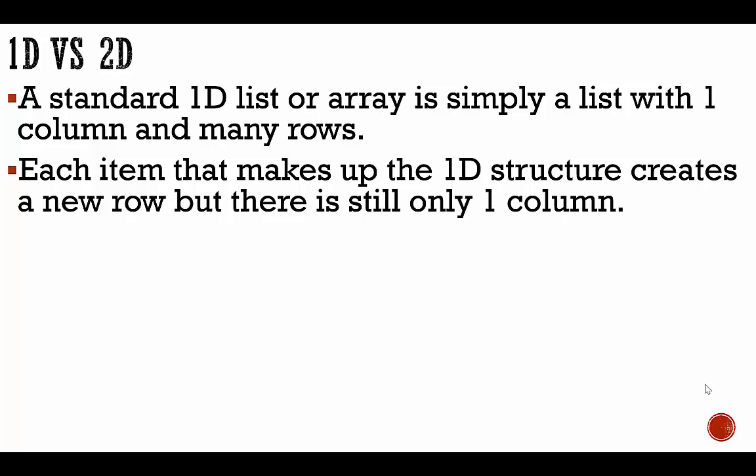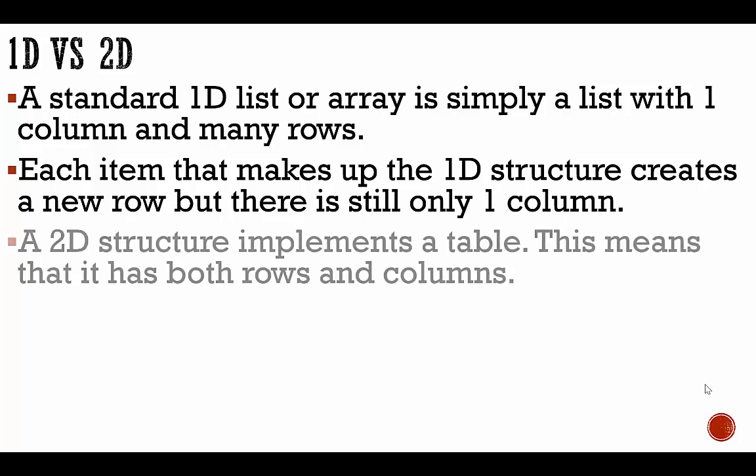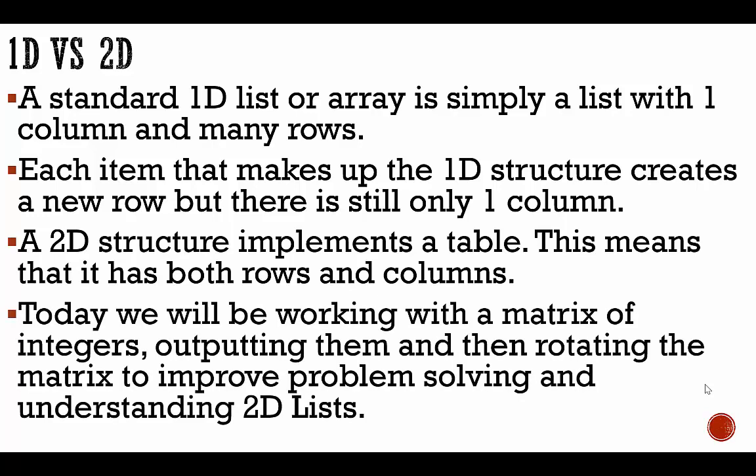Think about a shopping list. Every time you add an item to a shopping list, you're staying within the same column but you're creating a new row. A 2D structure implements a table, which means that it has both rows and columns.